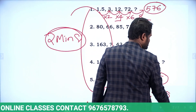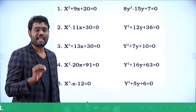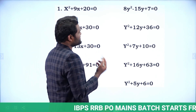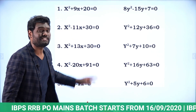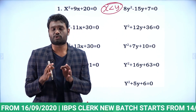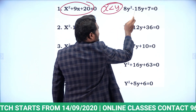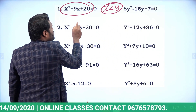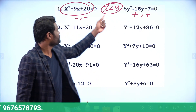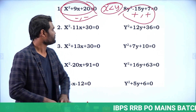Now for the five quadratic equation questions from the first shift. First: x² + 9x + 20 = 0 and 8y² − 15y + 7 = 0. Just by looking at the signs — both terms positive means negative roots for x; negative middle term and positive last term means positive roots for y. X value is negative, y value is positive, so x < y.